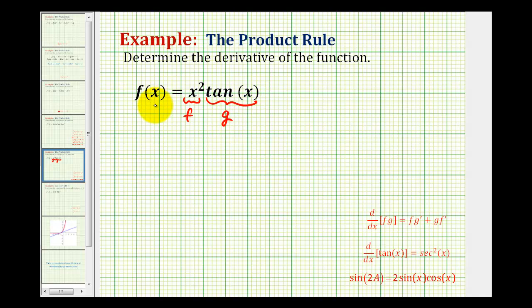To determine the derivative of f, we'll apply the product rule. So f prime of x is going to be equal to the first function f, which is x squared, times the derivative of g, which is the second function.